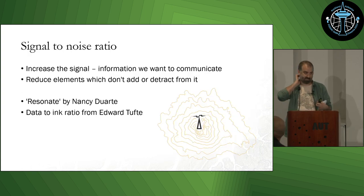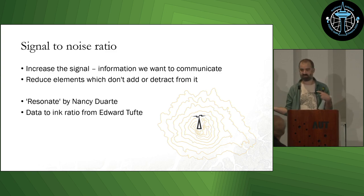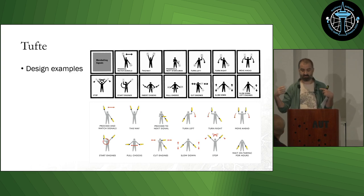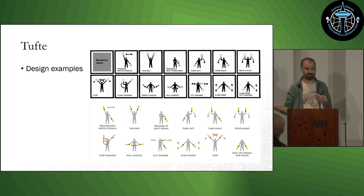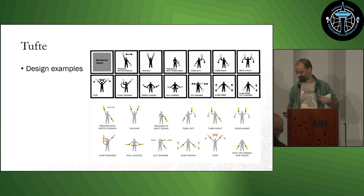This is another take on it from Nancy Duarte, related to data visualisation. It's the idea of signal-to-noise, where signal is the information you want to communicate and noise is the stuff that's getting in the way or distracting you. Tufte is one of the main proponents here — you can see the top example has a lot of information, and a lot of it seems relevant, but it's actually getting in the way of seeing what you're meant to look at, versus the bottom where it's pulled away.